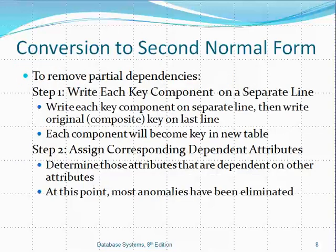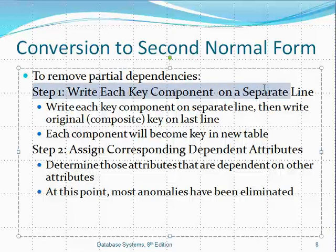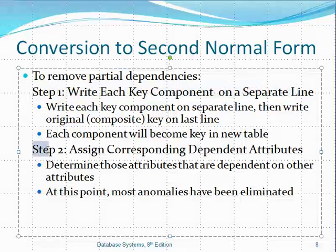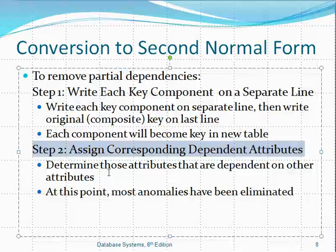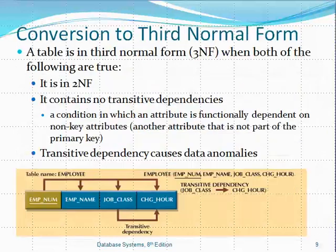The algorithm to convert to the second normal form has two steps: first, identify the new tables by writing each key component on a separate line and creating a table for the initial composite primary key; then assign dependent attributes based on minimal dependency — if an attribute depends on only one part of the primary key, assign it there first, and the remaining attributes go into the table containing the composite primary key.